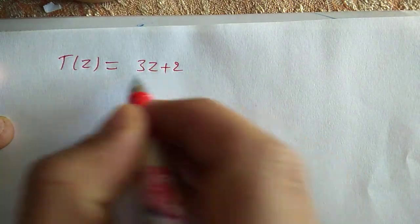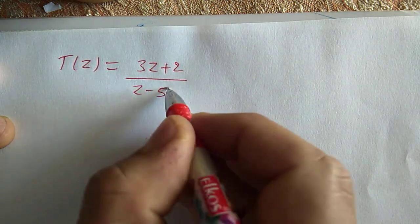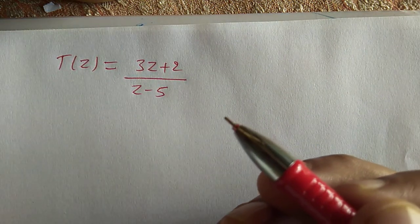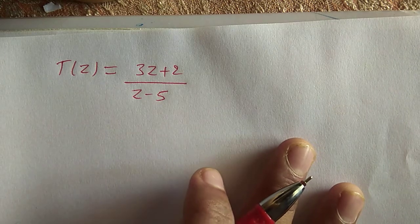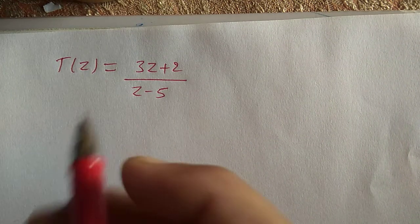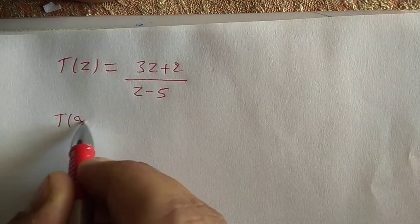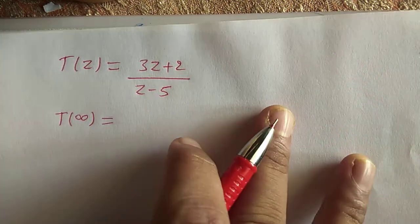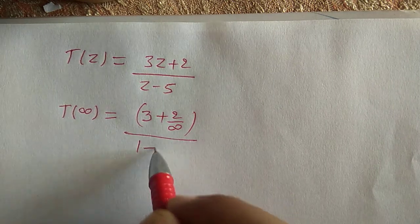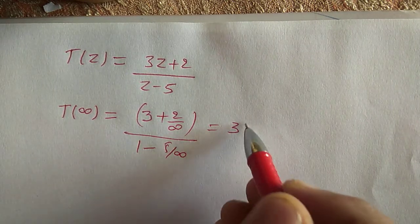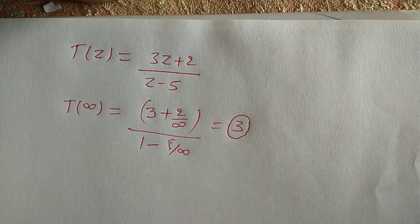The next question: find the fixed points of the bilinear transformation T(z) = (3z + 2)/(z − 5). We first check whether infinity is a fixed point by computing T(∞). Taking z common in numerator and denominator, T(∞) = 3/1 = 3. Since T(∞) ≠ ∞, infinity is not a fixed point.